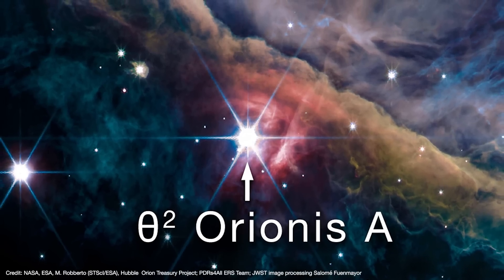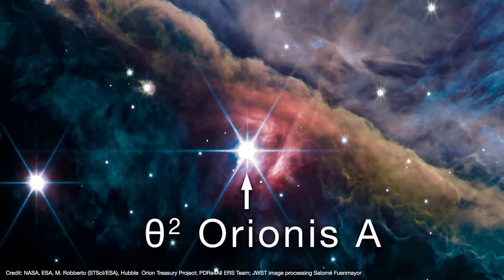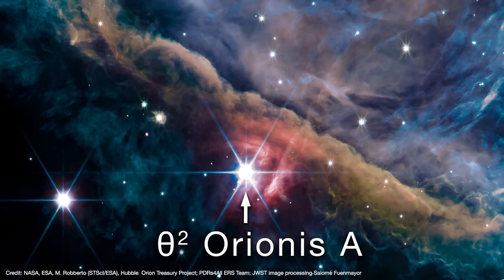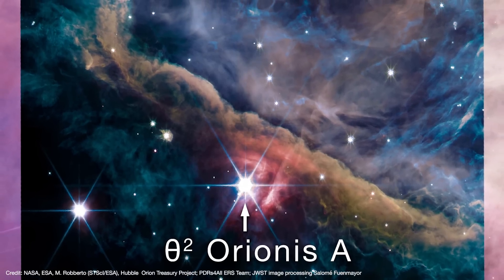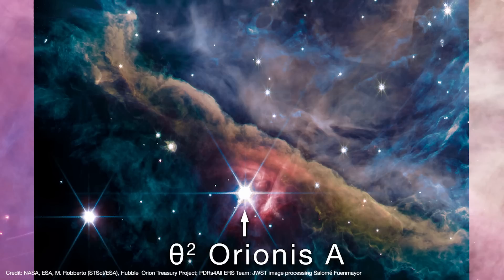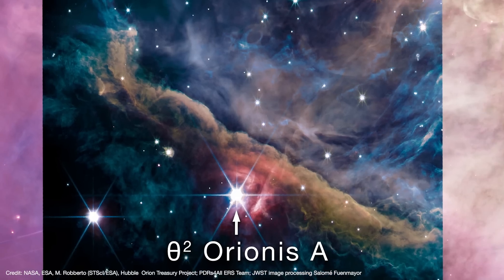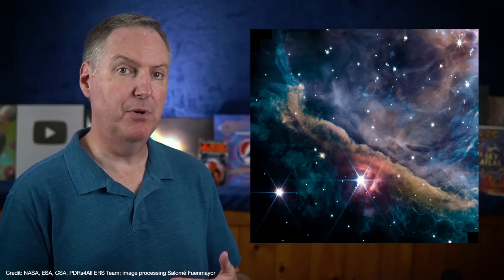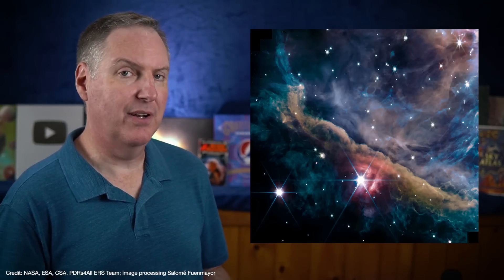The bright star right next to the bar is called theta 2 Orionis A. It's actually a triple star system with a combined mass of about 39 suns. Their winds are disrupting the immediate surrounding region, but the greater bar is largely intact. And that's because there's a much larger cluster of stars called the trapezium that lies in the center of the nebula toward the northwest. The trapezium lies outside of near cam's field of view, but they're pushing material into the bar. So the bar is kind of like a mountain range of gas that's been built up over time. And we just happen to be looking along its edge.